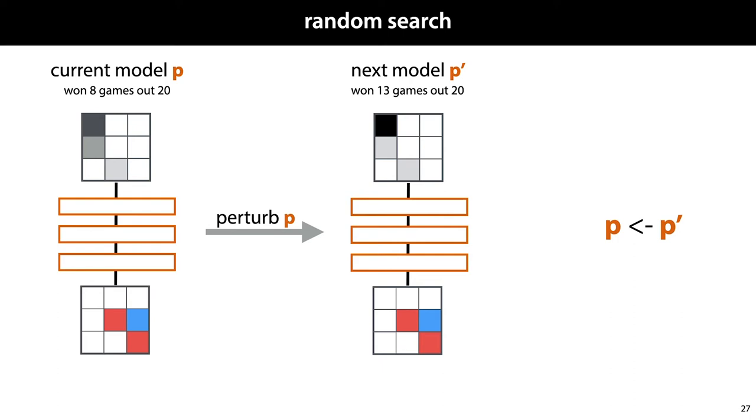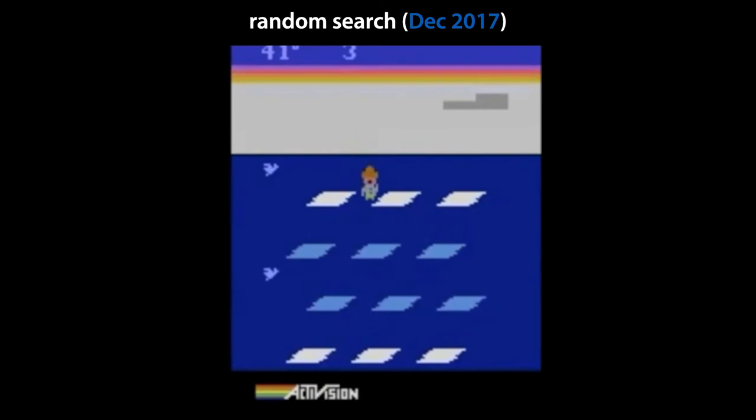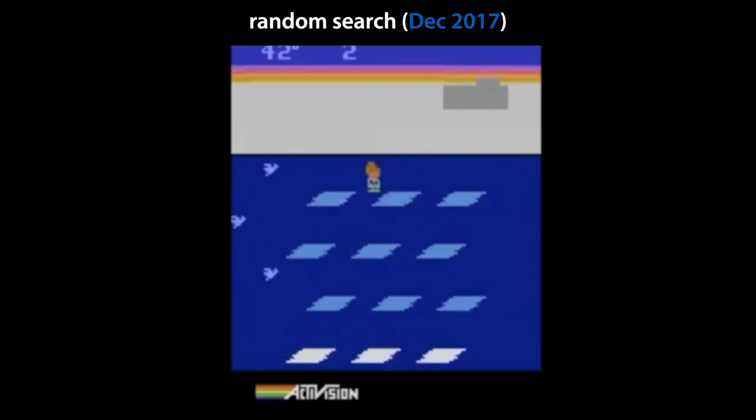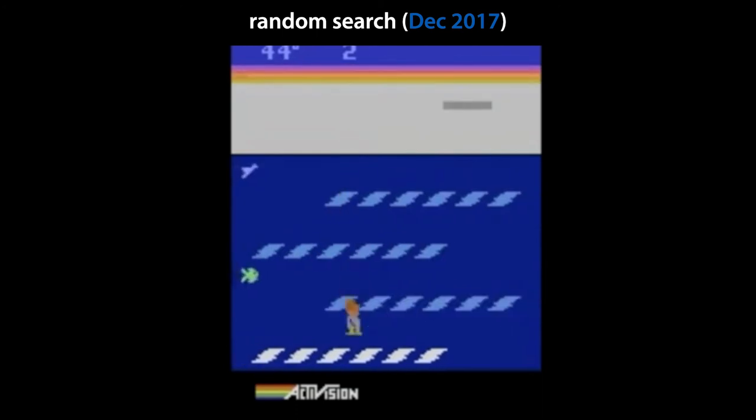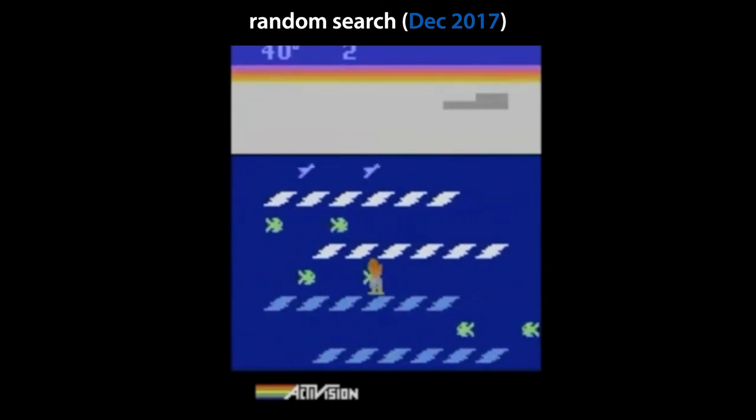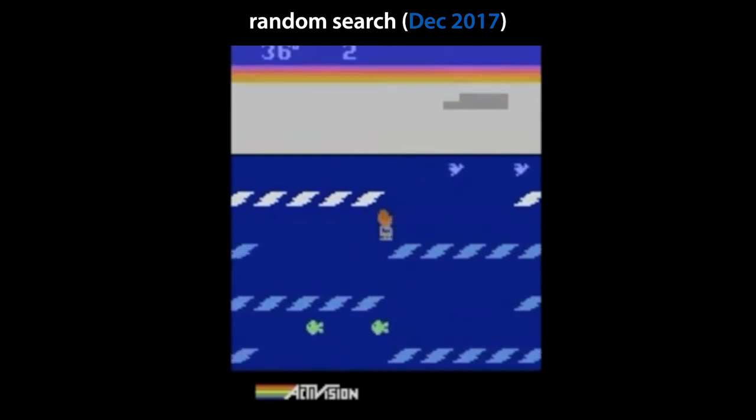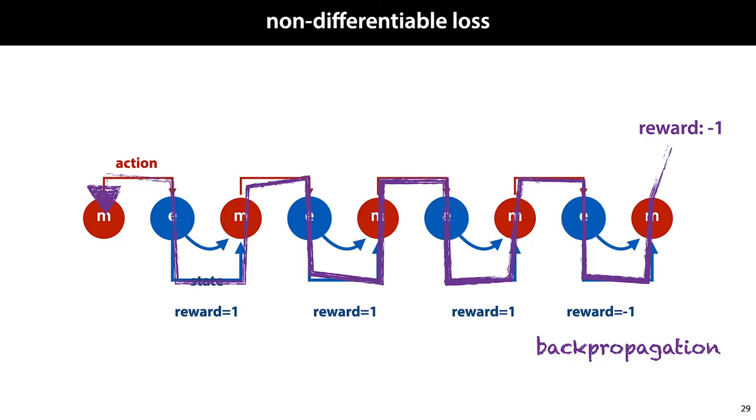And in some cases, it is. For some games, like Frostbite, which is one of the Atari games, a model trained by random search does exceedingly well. And remember that the Atari challenge is from pixels. That means that we're looking at a convolutional neural network that was trained not by gradient descent, but by random search. So sometimes random search works very well, but not always. And when it doesn't, we can get a big boost in power from applying backpropagation where we can.